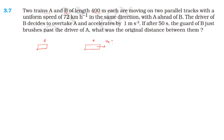The speed is 72 km per hour. The initial speed of train B is 72 km per hour. B decides to overtake A with an acceleration of 1 meter per second squared, and the time t is equal to 50 seconds. We need to find the original distance.